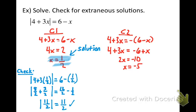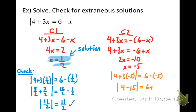Now checking x equals negative 5 in the original equation: the absolute value of 4 plus 3 times negative 5 equals 6 minus negative 5. That's the absolute value of 4 minus 15 equals 6 plus 5, which gives the absolute value of negative 11 equals 11. That's true as well. So in this case, both of the apparent solutions really were solutions. There were no extraneous solutions here. Label them both as solutions.